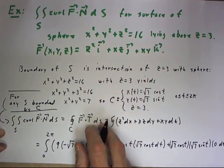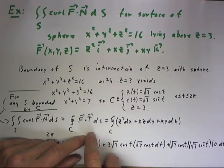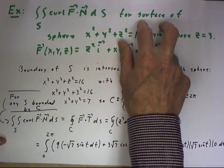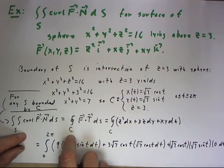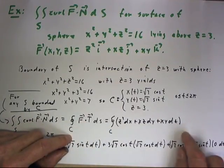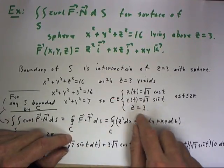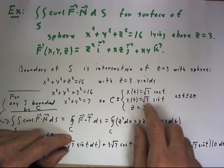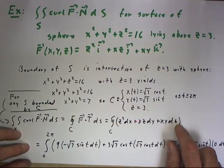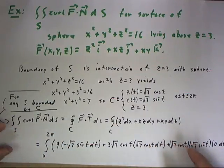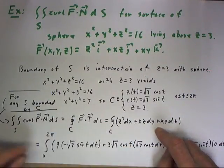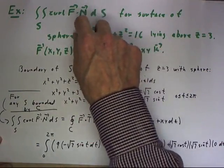Since our desired surface is bounded by c, all we have to do is integrate F dot t ds over c. We've got a parameterization for the curve, so we can just plug the x, y, and z of our parameterization into this expression and get our result without all the hassle of doing a surface integral.